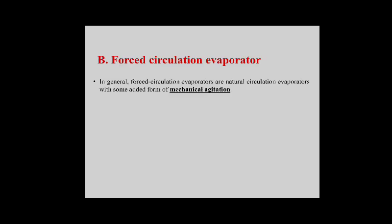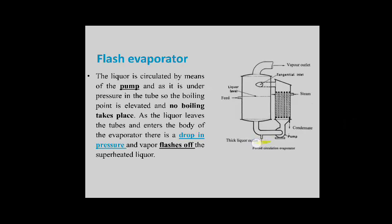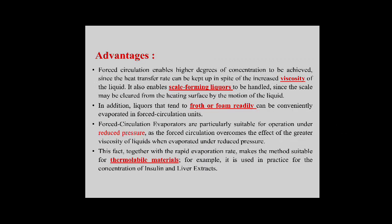Forced circulation evaporators use mechanical agitation to overcome the problems of natural circulation evaporators. In the flash evaporator, the liquor is circulated by means of a pump so it is under pressure in the tubes — the boiling point is elevated and no boiling takes place. As the liquor leaves the tubes and enters the body of the evaporator, there is a drop in pressure and the vapor flashes off the superheated liquid. Advantages: forced circulation enables a higher degree of concentration; suitable for viscous liquids and liquors prone to frosting or foaming; particularly suitable for operation under reduced pressure and for thermolabile materials.